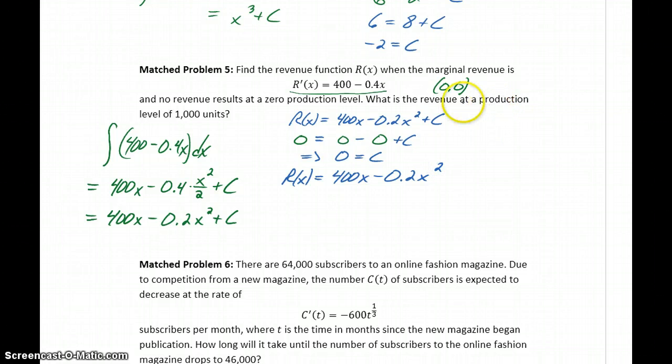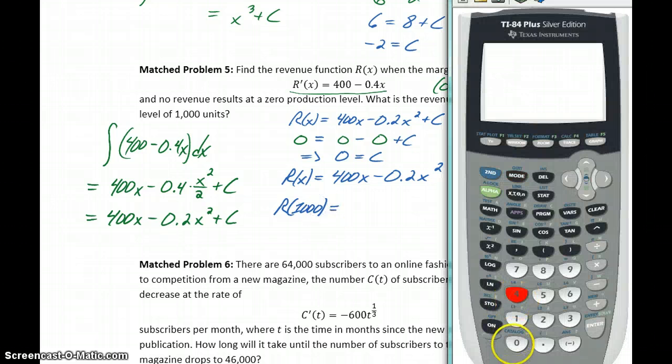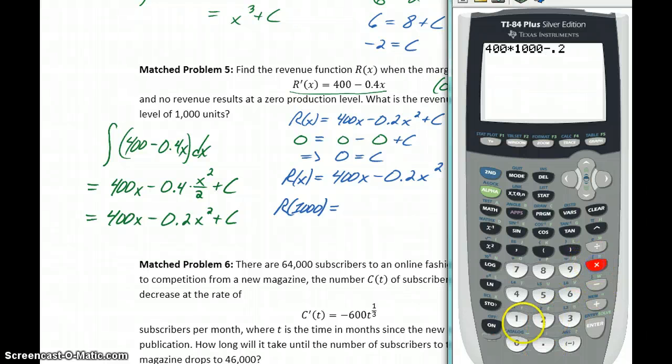Now if we want to find our revenue at a production level of 1,000 units, we can evaluate that revenue function at 1,000. So we'll take 400 times 1,000 minus 0.2 times 1,000 squared. So at a production level of 1,000 units, we have a revenue of $200,000.